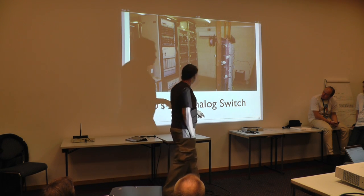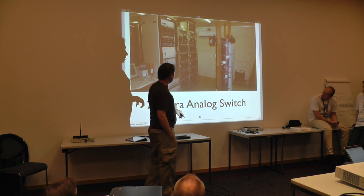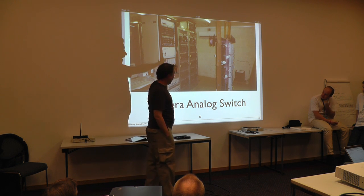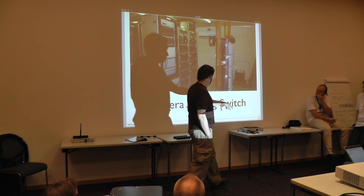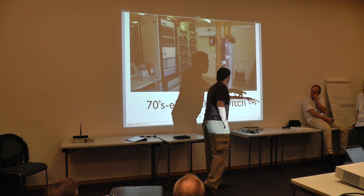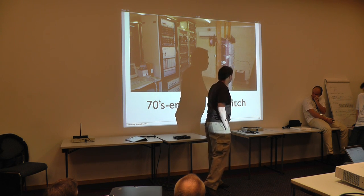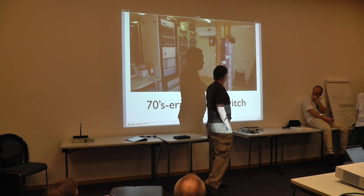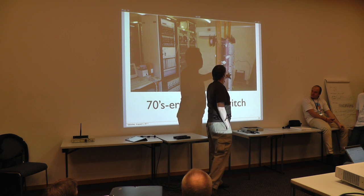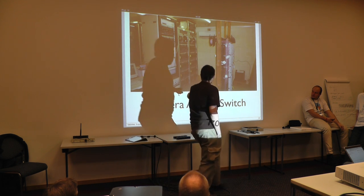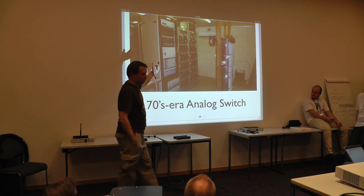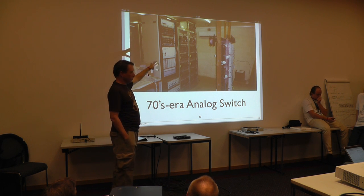So this isn't an office building. This is actually a small island in the Pacific — this is their national telephone network. A bunch of telephone cables coming from all over the island go into this punch down panel. Then they go back onto the floor and come up in the back of that rack.